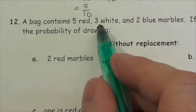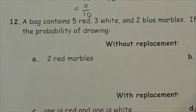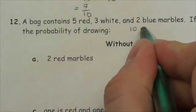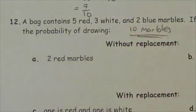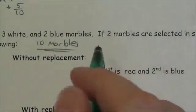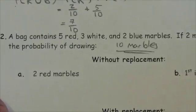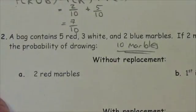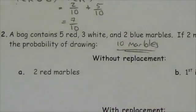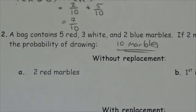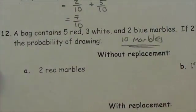A bag contains five red, three white, and two blue marbles, meaning there are ten marbles total — it's important to establish that. Two marbles are selected in succession. When we have two events like this, we're typically talking about either independent or dependent events. Mutually exclusive or non-mutually exclusive usually refers to one event that could happen in different ways — still just one event. Here we've got multiple events happening.